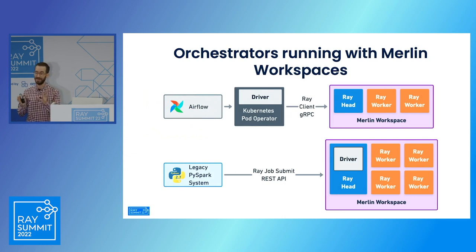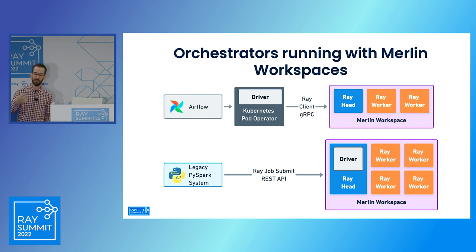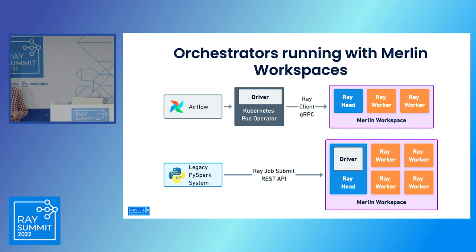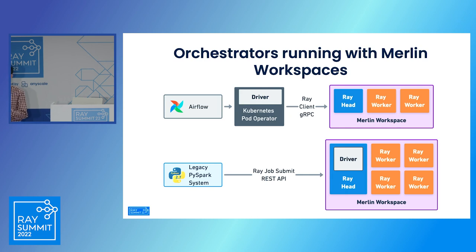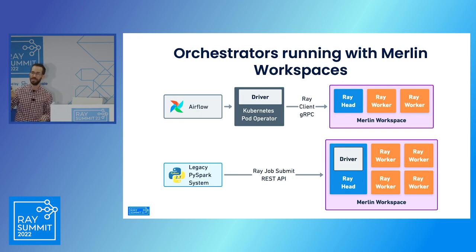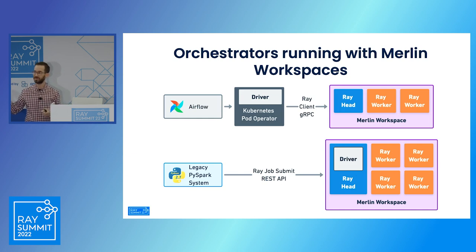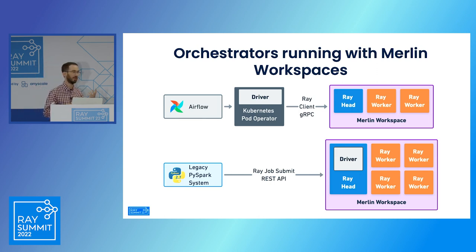From our orchestrators, there are different ways to schedule and run jobs on the remote Ray clusters. From Airflow, we can spin up a pod that runs the Ray driver code, which works remotely with the Ray cluster through the Ray client gRPC API. From a legacy PySpark system, we can leverage Ray job submit to send Ray jobs that run the Ray driver on the Ray head node, and wait for the job to end and tail the logs. This shows the many different ways we can use Ray to run remote jobs, and Ray job submit was especially helpful for connecting legacy systems to the new platform.